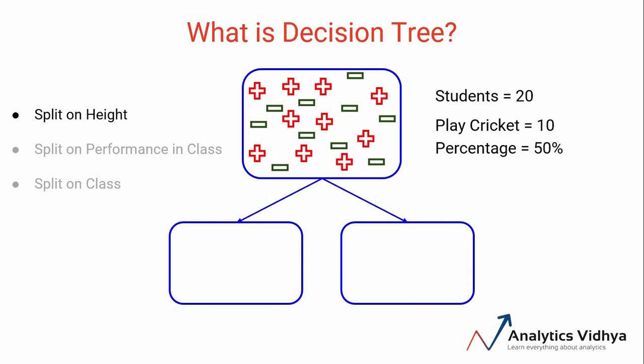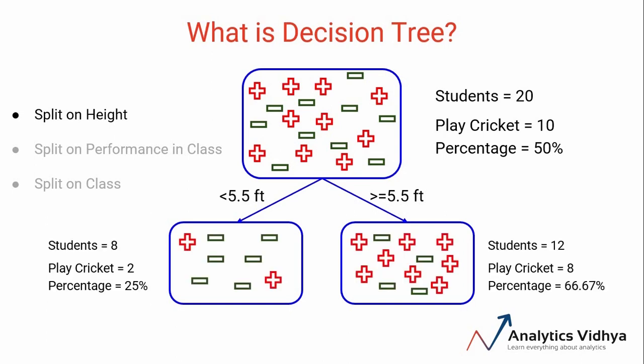We can choose a height value, let's say 5.5 feet, and split the entire population such that students below 5.5 feet are part of one subgroup and students above 5.5 feet will be in another subgroup.